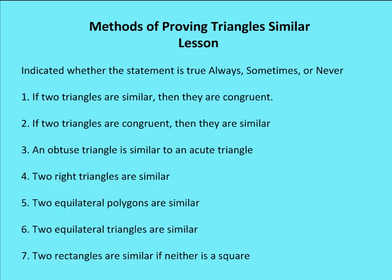Now we have some questions — determine whether each statement is true always, sometimes, or never. First: if two triangles are similar, then they are congruent. The answer is sometimes. Sometimes we'll have triangles that are similar and also congruent, and sometimes similar but not congruent. For congruence, the side lengths have to be the same — not just the ratio. If the ratio is 1 to 1, the triangles are congruent; if it's any other ratio, they are similar but not congruent.